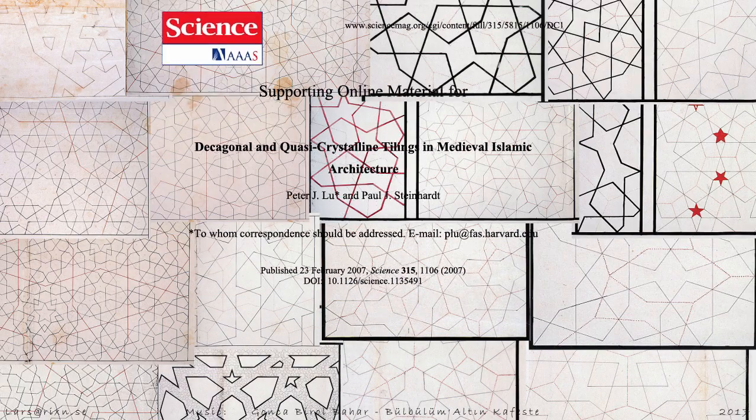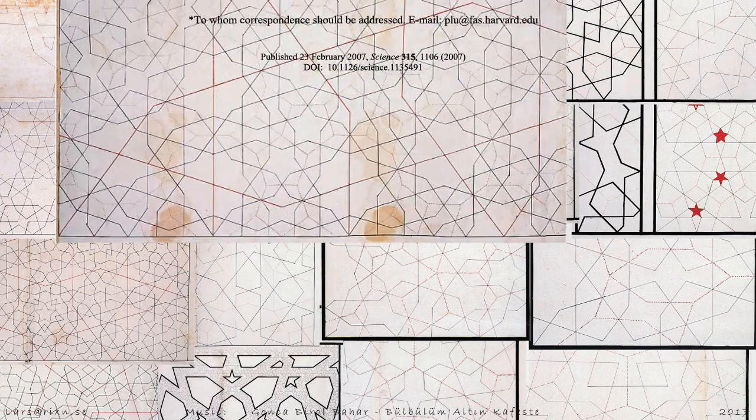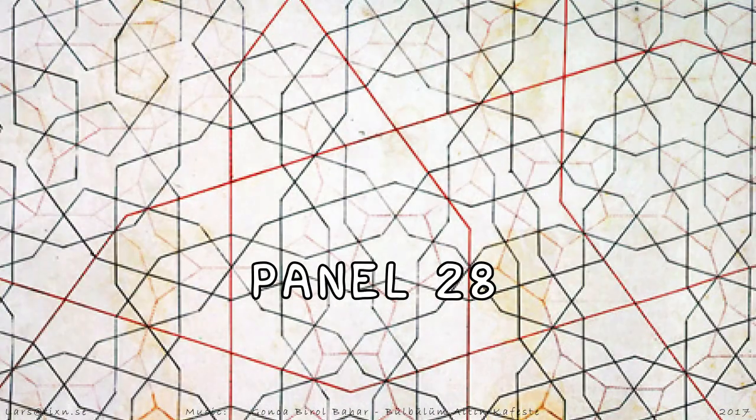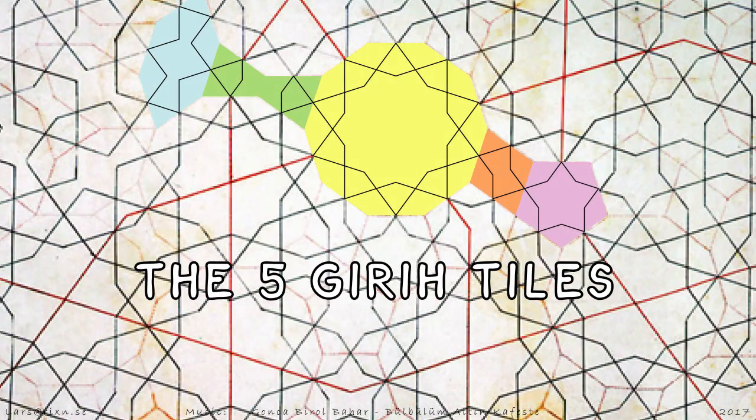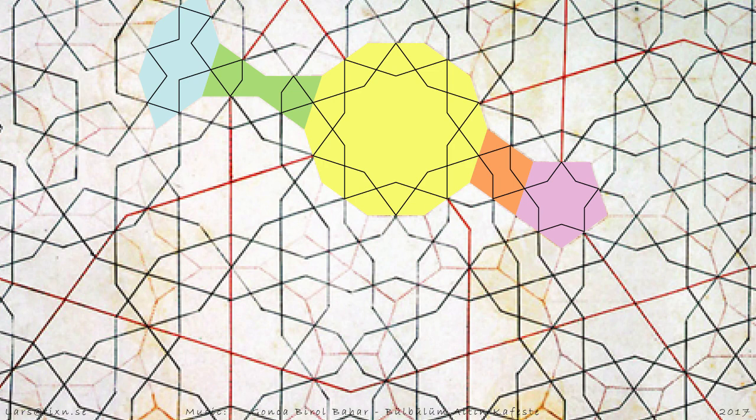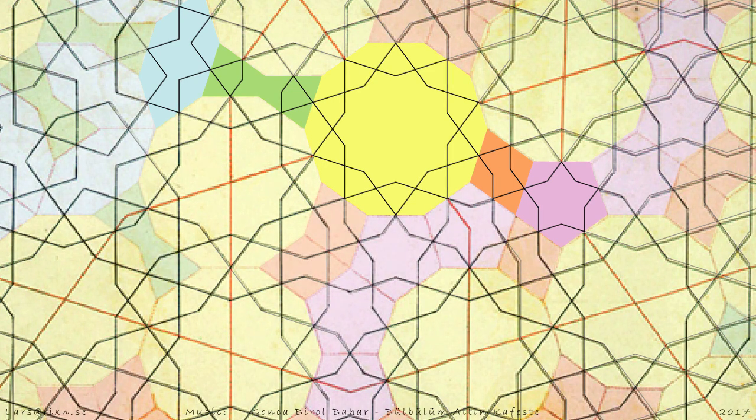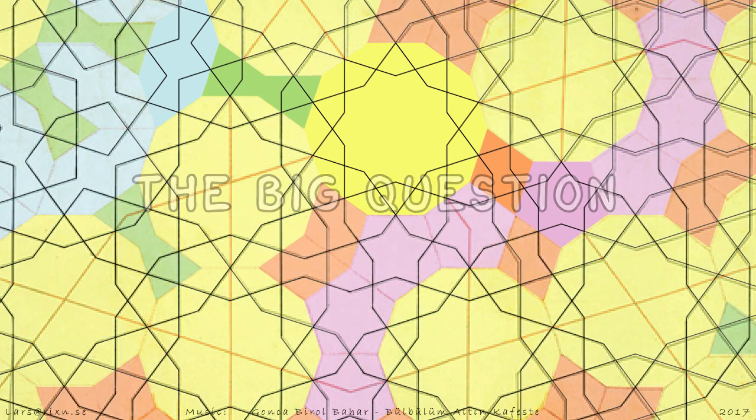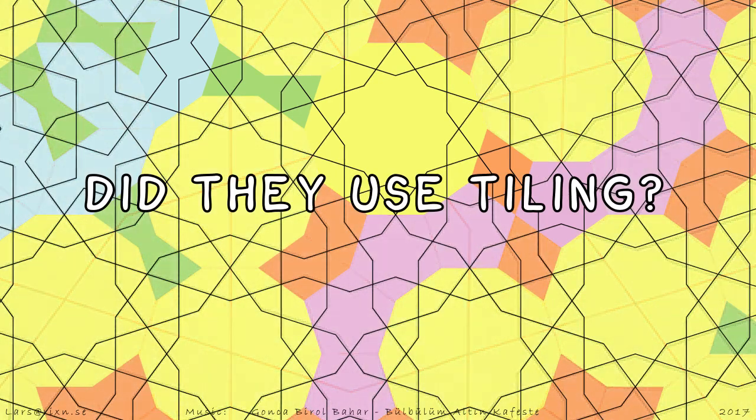In 2007, the physicists Peter J. Lu and Paul J. Steinhardt used the Panel 28 to define five tiles as Girih tiles. Lu made the case that tilings have been a crucial part of the creation of these historical patterns.